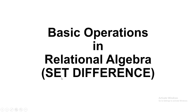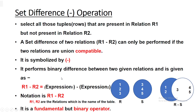Hello friends, today's topic is set difference in relational algebra. In the previous video we have seen there are two types of operations in relational algebra: basic or fundamental, and derived. Both operations are performed using a unary operator or a binary operator. A unary operator takes a single relation, whereas a binary operator takes two relations.